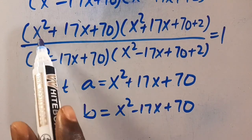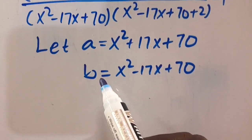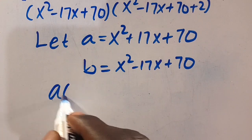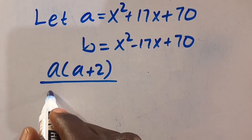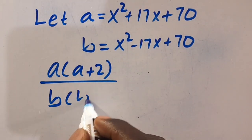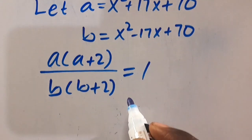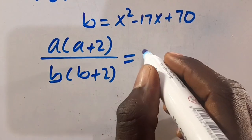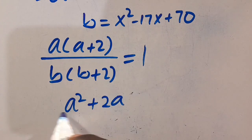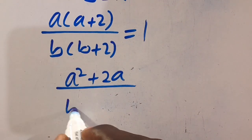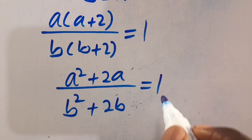So when we substitute: here will be a, here will be a plus 2, here will be b, here will be b plus 2. So we have a times (a plus 2) divided by b times (b plus 2) equals 1. Expanding: a squared plus 2a divided by b squared plus 2b equals 1.